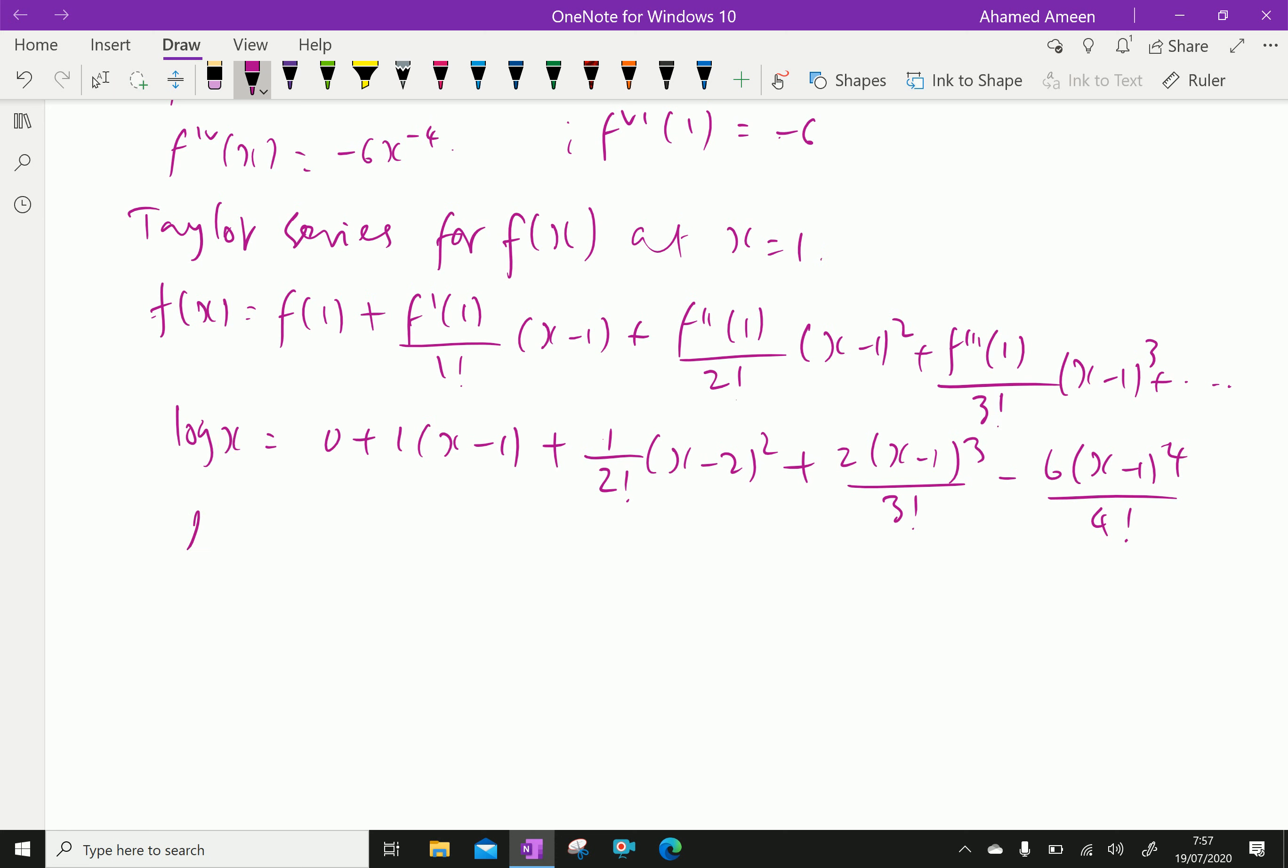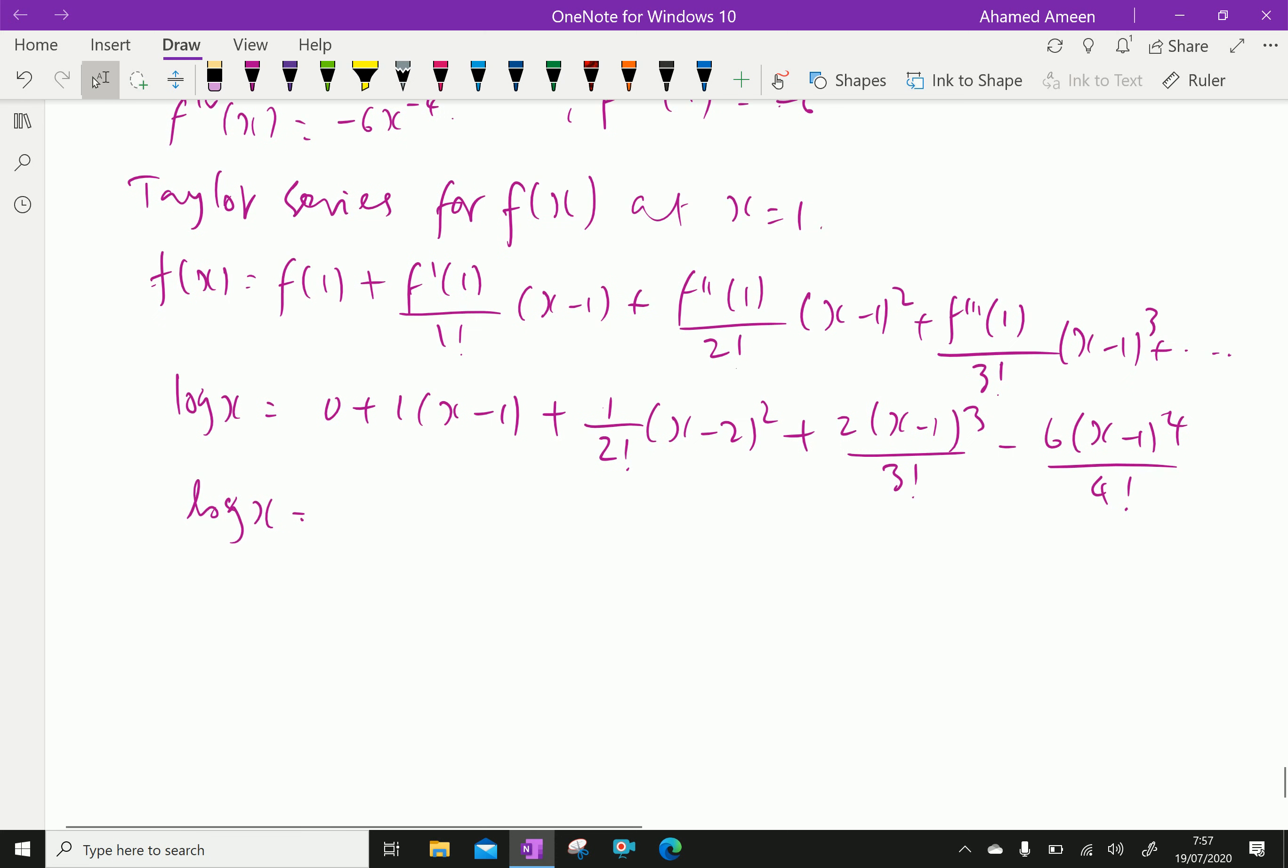Log x equals (x-1) minus, the 2 factorial term is -1 by 2 times (x-1)², then 3 factorial is 3 times 2 times 1, so 2 cancels, therefore we get plus 1/3 times (x-1)³. The 4 factorial term: 4 factorial is 24, 6 cancels, so minus 1/4 times (x-1)^4.